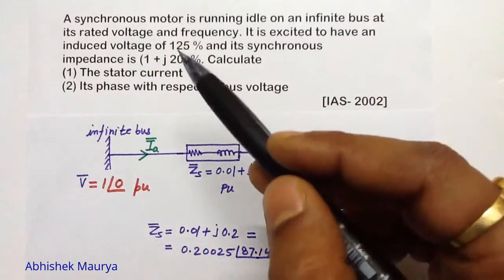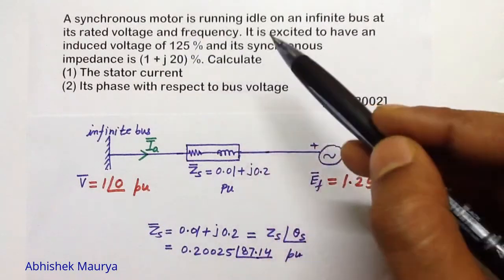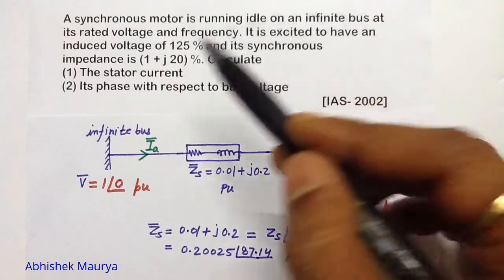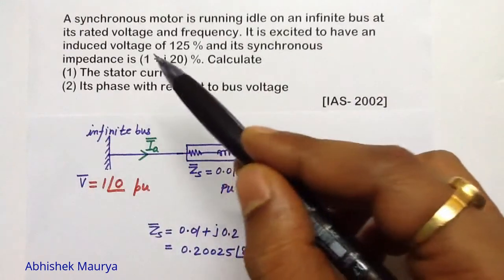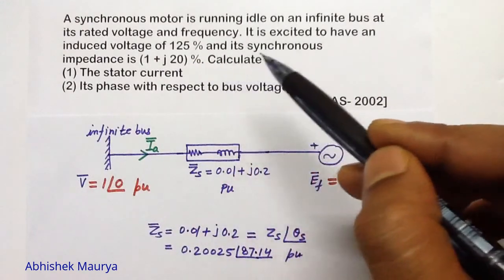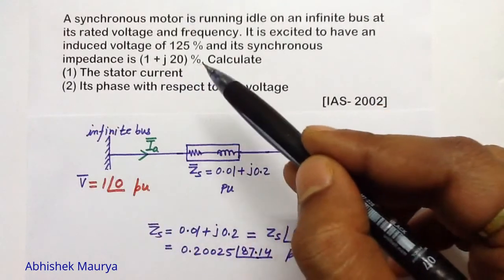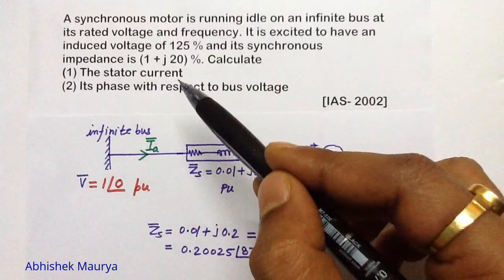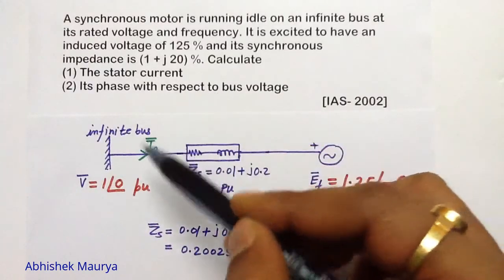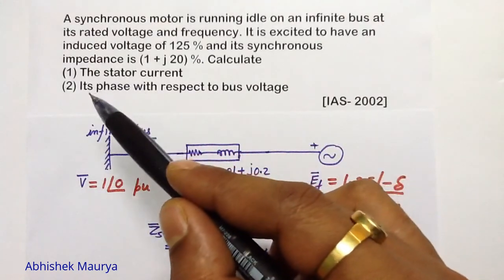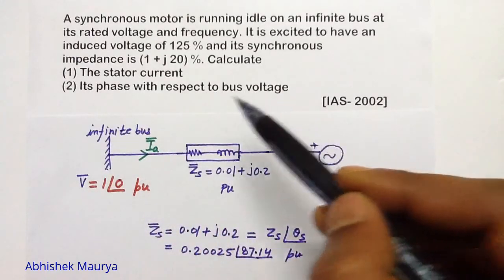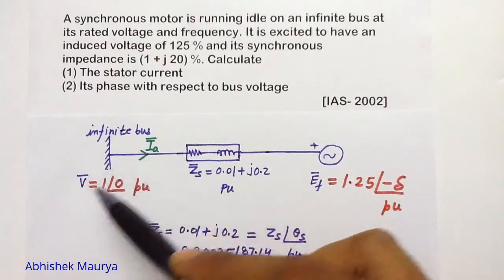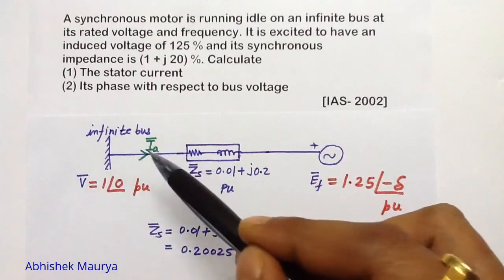We are going to solve this problem. An asynchronous motor is running idle on an infinite bus at its rated voltage and frequency. It is excited to have an induced voltage of 125%, and its synchronous impedance is 1 plus J 20%. We have to calculate the stator current IA, and in the next part we have to calculate the stator current phase with respect to the bus voltage — that is, the phase difference between the bus voltage and the stator current.